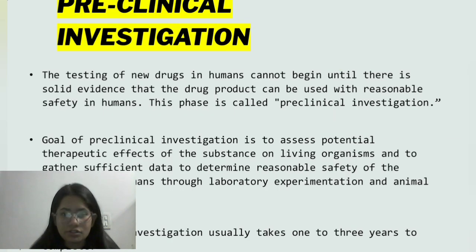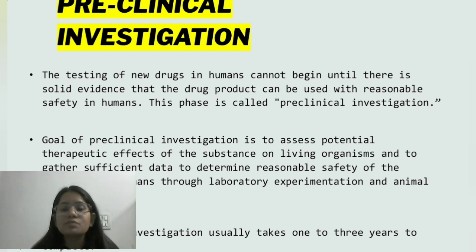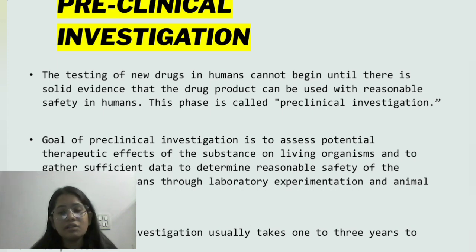What is pre-clinical investigation? The testing of new drugs in humans cannot begin until there is solid evidence that the drug product can be used with reasonable safety in humans. This phase is called pre-clinical investigation. The goal is to assess potential therapeutic effects of the substance on living organisms and to gather sufficient data to determine reasonable safety through laboratory experimentation and animal investigation. A pre-clinical investigation usually takes 1 to 3 years to complete.